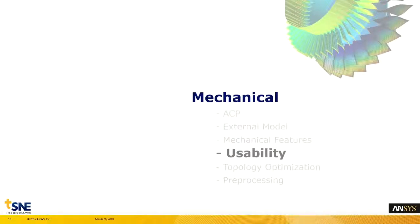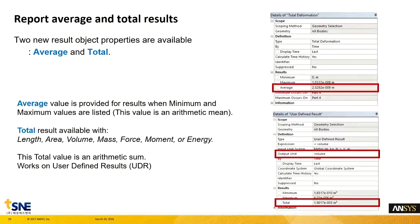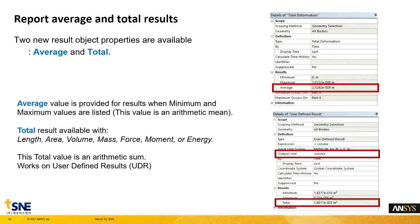다음은 Mechanical의 Usability에 대해서 확인해 보도록 하겠습니다. 보고서에 나오는 결과값에 대해서 처리 방법에 관한 기능이 두 개 새롭게 들어왔는데요, 바로 Average와 Total이라고 하는 기능입니다. Average는 해석 결과의 Min/Max 값 자체의 평균값으로 출력해 보여주는 것이고, Total은 산술적으로 모두 더한 값이 얼마인지를 보여주는 값입니다. Total 기능은 모든 항목에 적용 가능한 것은 아니고, Length, Area, Volume, Mass, Force, Moment, Energy 등의 항목에 대해서만 적용하실 수 있습니다.